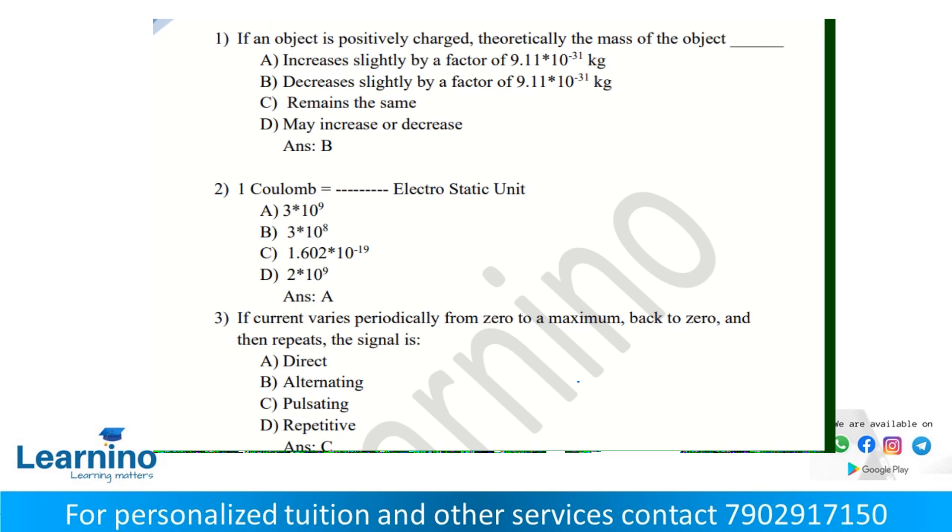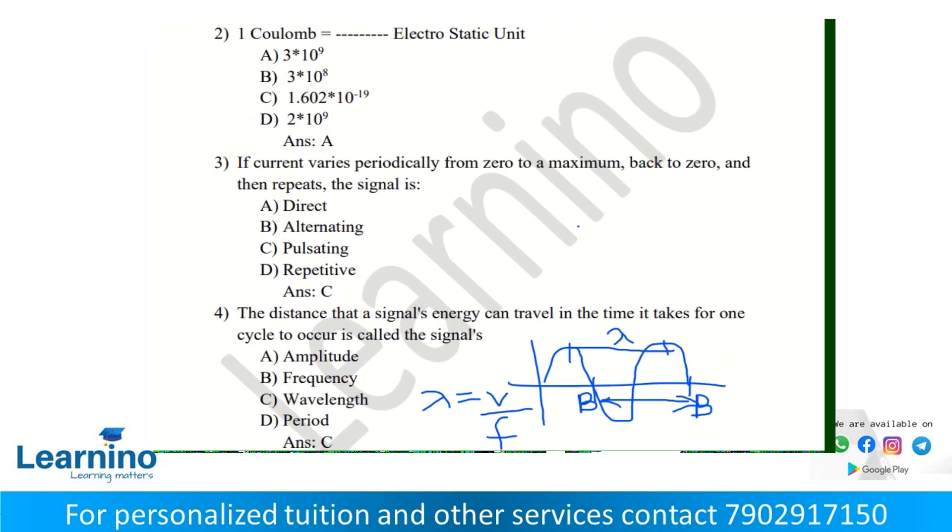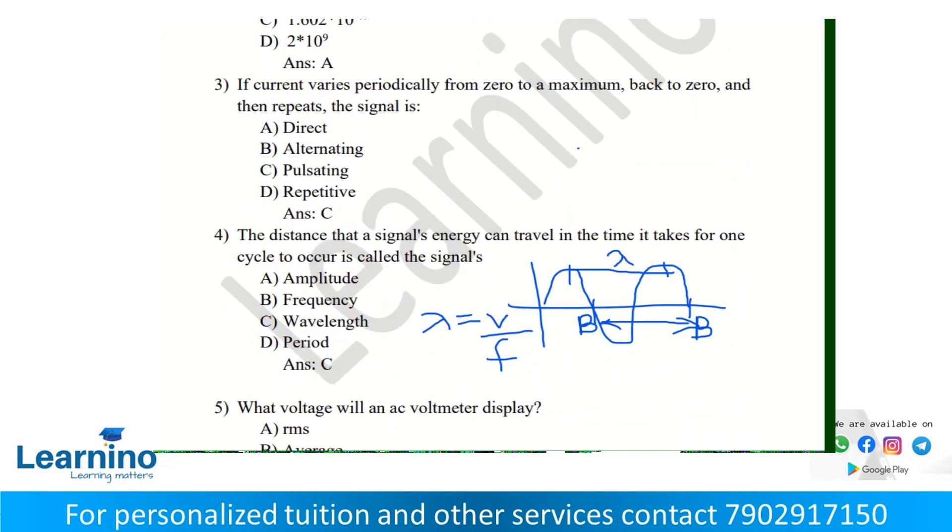If current varies periodically from zero to maximum, back to zero, and then repeats, the signal is pulsating. Periodical means at regular intervals, zero to maximum value. So the answer is pulsating signal.